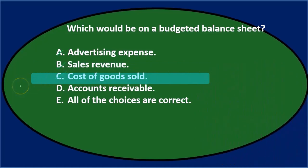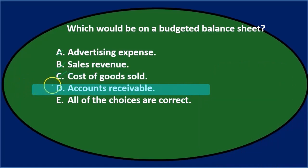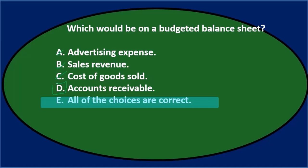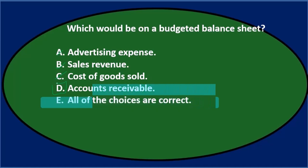So typically no for cost of goods sold. D. Accounts receivable — that's a balance sheet item typically, so I would think it would be on the budgeted balance sheet if we're talking about budgeted accounts receivable. And the last option says all of the choices are correct, but we've eliminated three of them, so that is not the case.